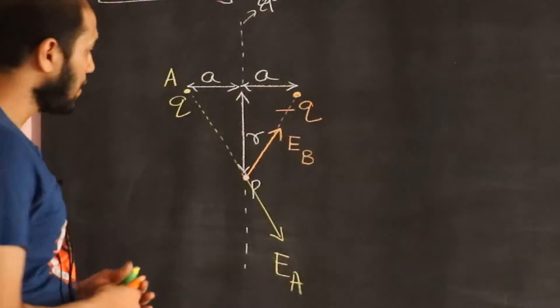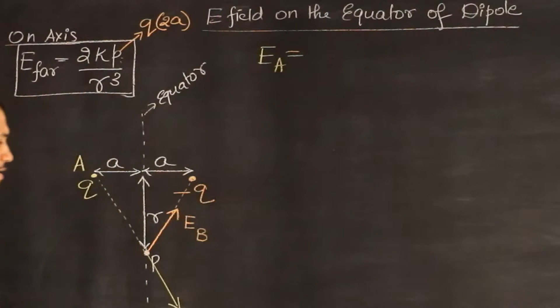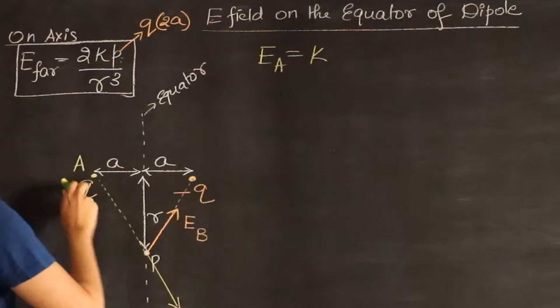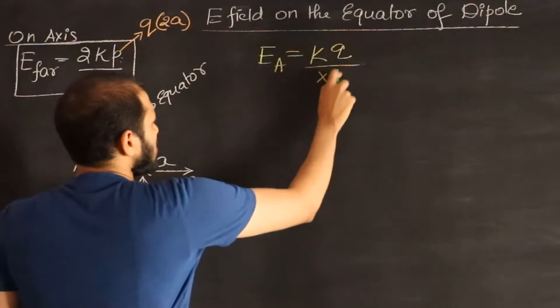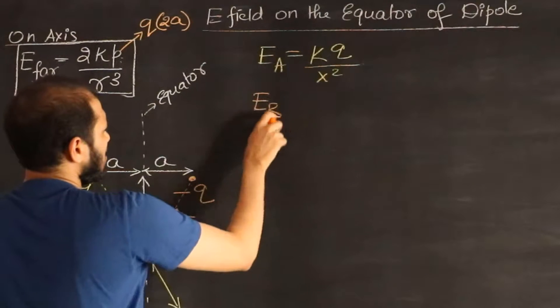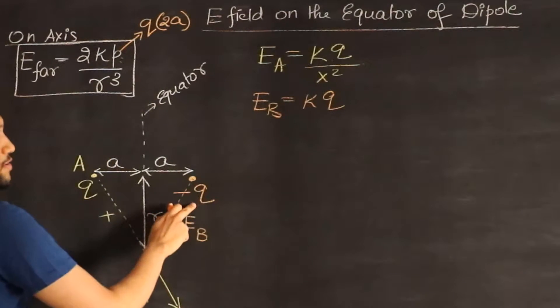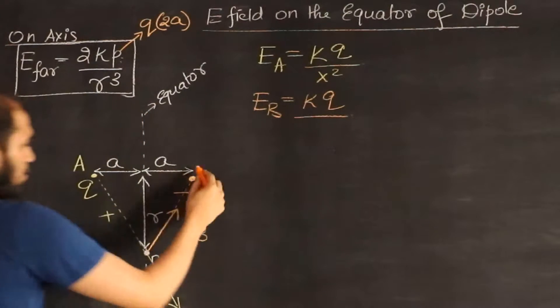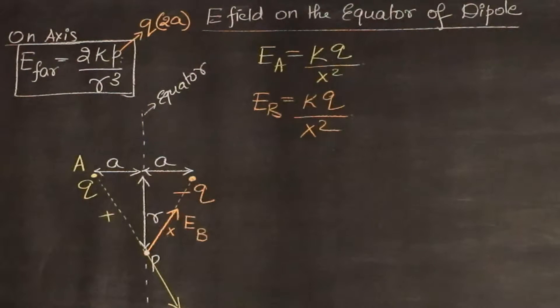First we will calculate the two magnitudes and then we'll figure out how to add them vectorially. So EA is going to use the same formula: KQ by R square. It's going to be KQ divided by this distance squared—let's call this X for now—so that's going to be X squared. And if you look at EB, that's going to be KQ, which is the same charge Q (this is a dipole), divided by X squared. Look at the symmetry—it's also X squared.